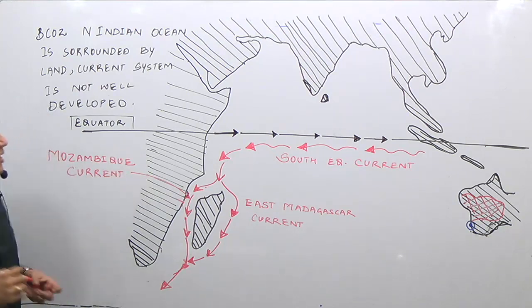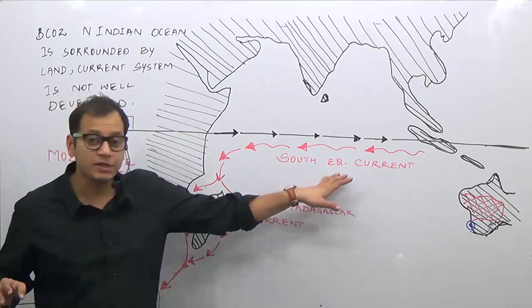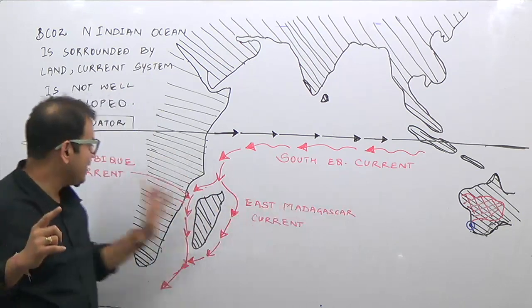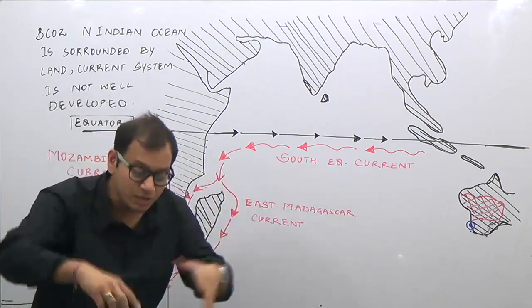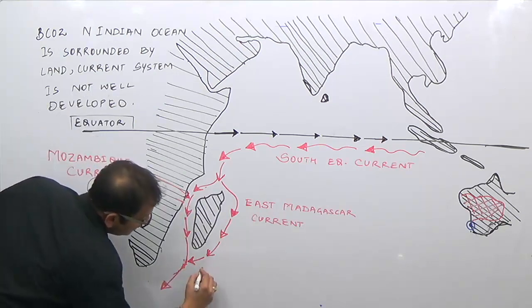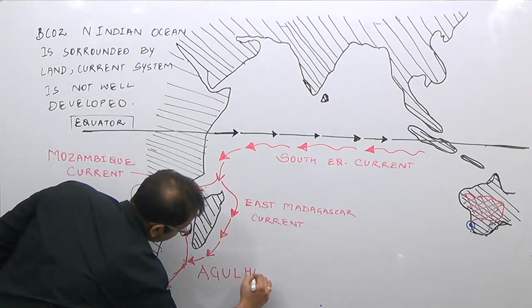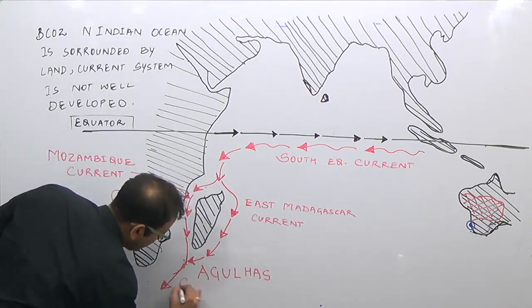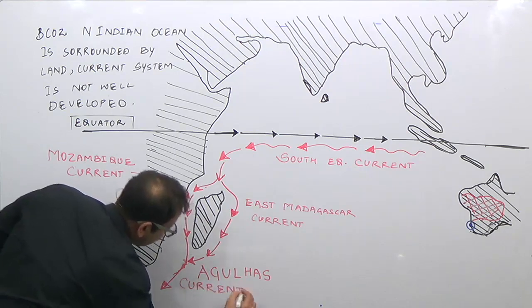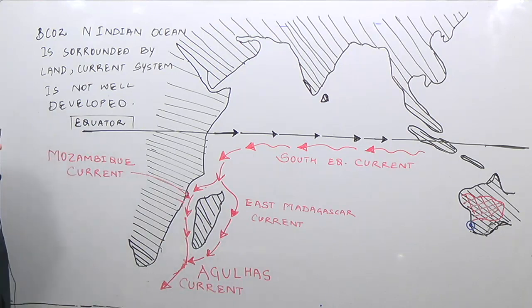So the major warm ocean currents of the southern Indian Ocean are: the South Equatorial Current, the East Madagascar Current, and the Mozambique Current. Both the Mozambique Current and the East Madagascar Current join to form a larger current known as the Agulhas Current, located at the southern tip of eastern Africa.